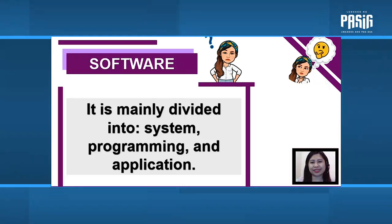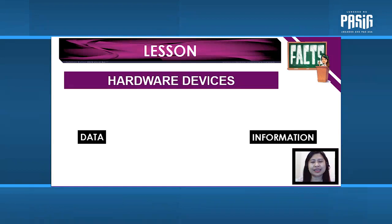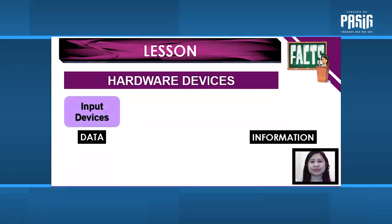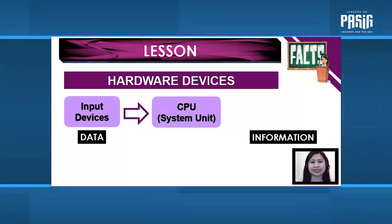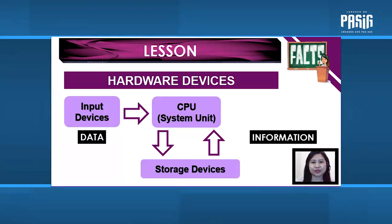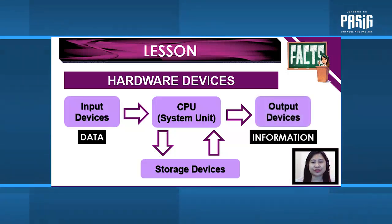That's all for our recap today. Let's now begin with our lesson. You are going to learn about different hardware devices used to convert data into information. Data is entered into the computer using input devices. The data will be mainly processed by the CPU, which is inside the system unit. You may save the data using storage devices, or copy some data from a storage device into the computer. To view the processed data — known as information — you will use output devices.